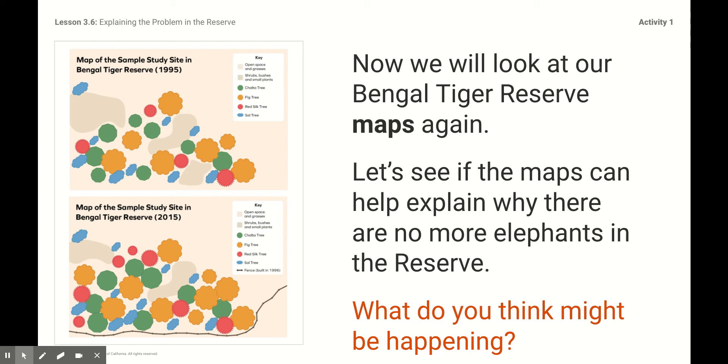Why do you think that there's no more chalta trees growing around in this habitat in other places? I want you to really pay attention to one little clue that are on these maps. If you look at the 1995 map, it looks very different. One key thing looks very different in the 1995 map and the 2015 map. There's a fence that they built in 1996 around the reserve. So that might have an effect on the animals getting to the trees, don't you think?